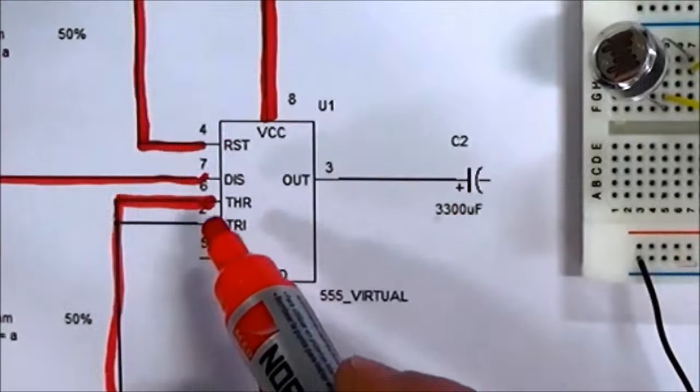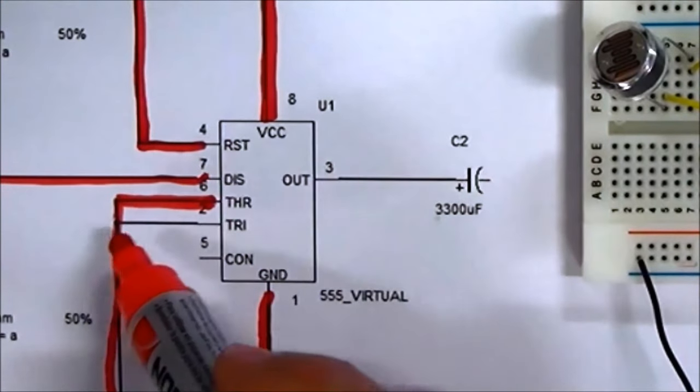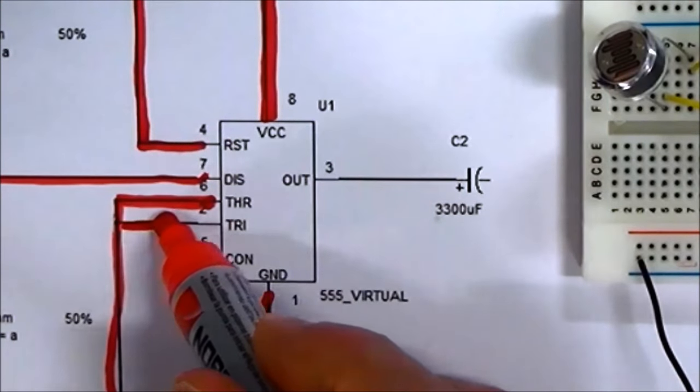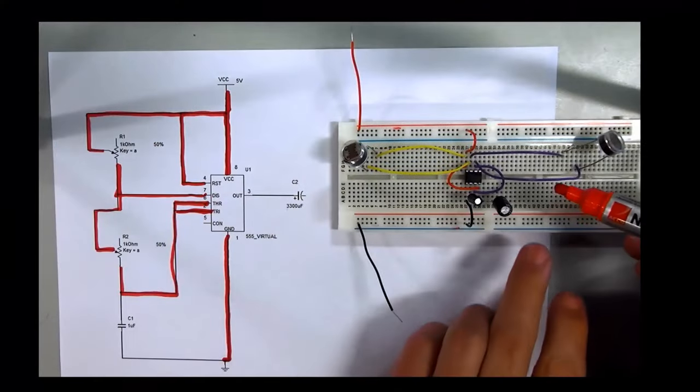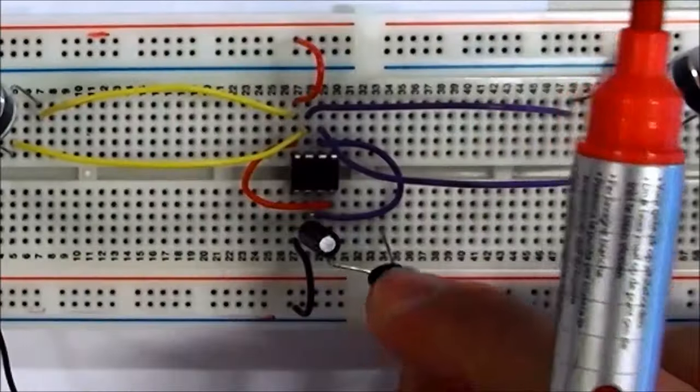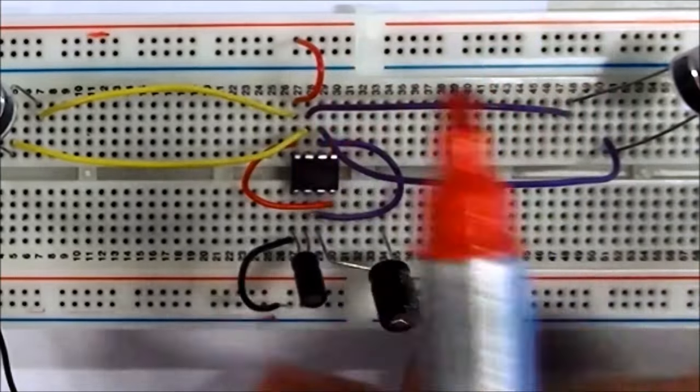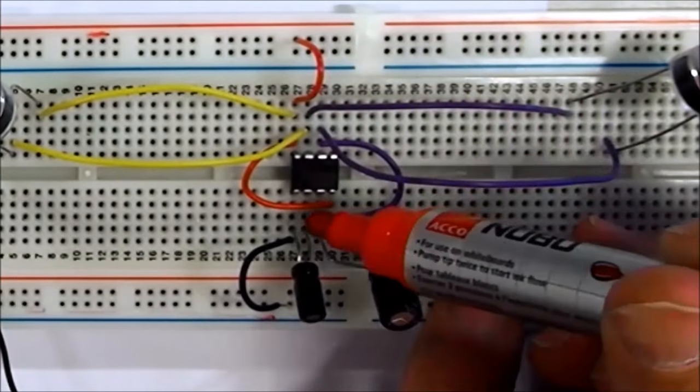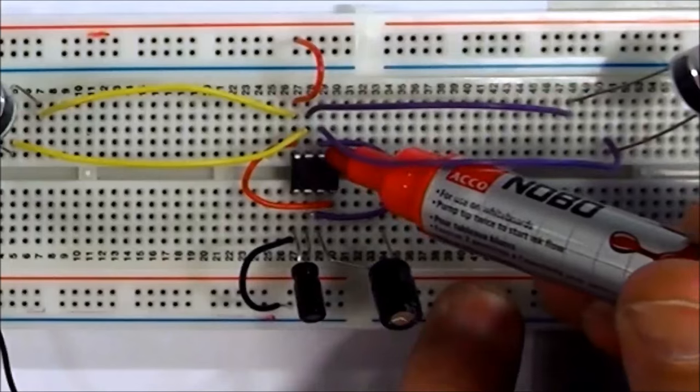We also note on the schematic that pins 2 and 6 are joined together. We have a purple wire doing that. So if I pull these apart a little, we can just see pin 2 being joined round to pin 6.